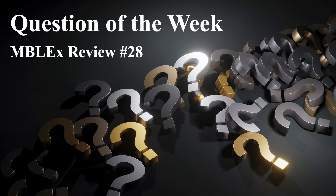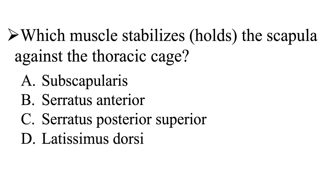All right, question of the week, MBLUX review number 28. Our question is: which muscle stabilizes or holds the scapula against the thoracic cage? Is it going to be A, the subscapularis; B, the serratus anterior; C, serratus posterior superior; or D, the latissimus dorsi?